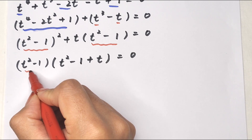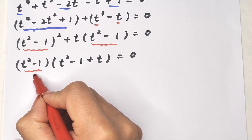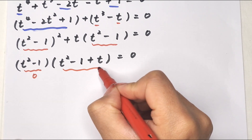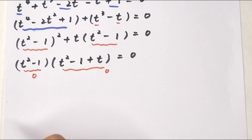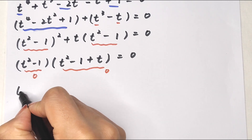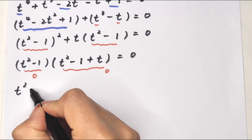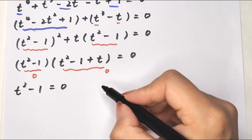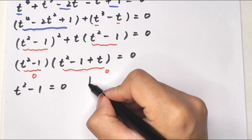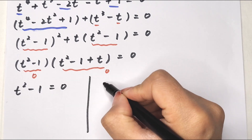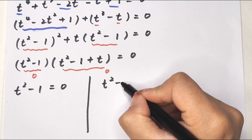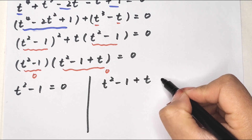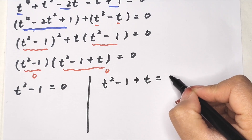Now we have two cases. Either (t squared minus 1) equals 0, or (t squared plus t minus 1) equals 0.